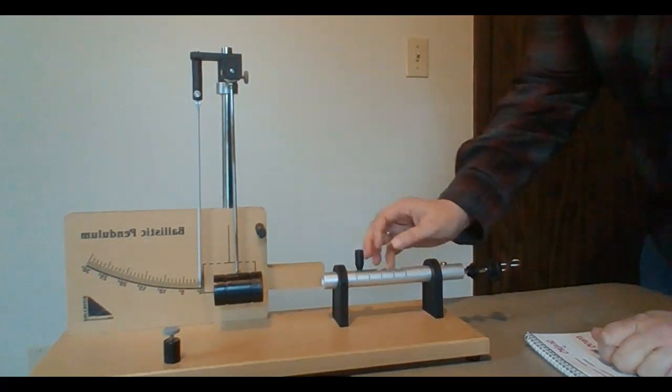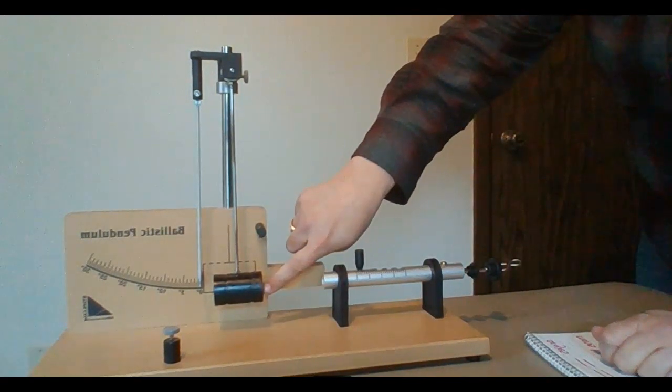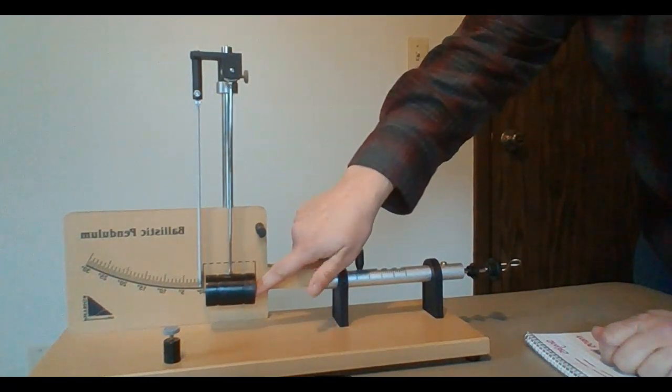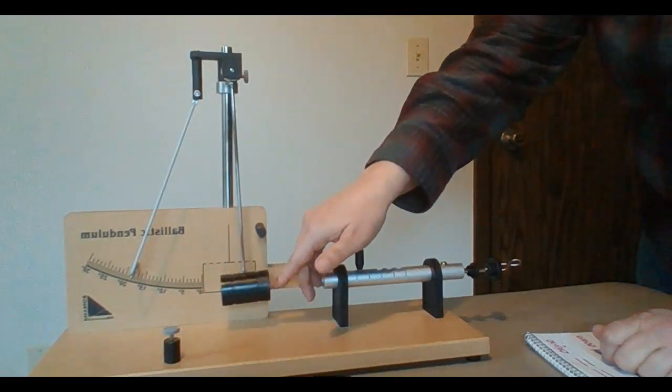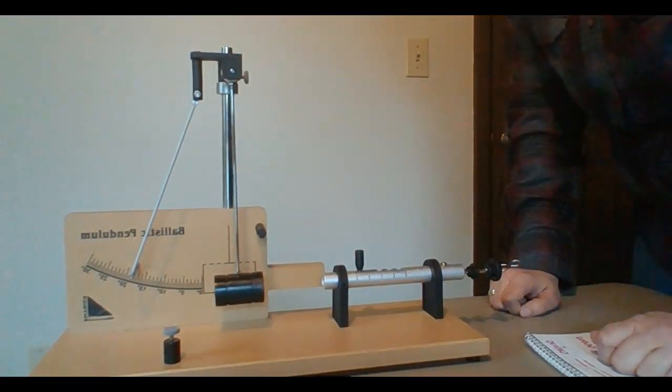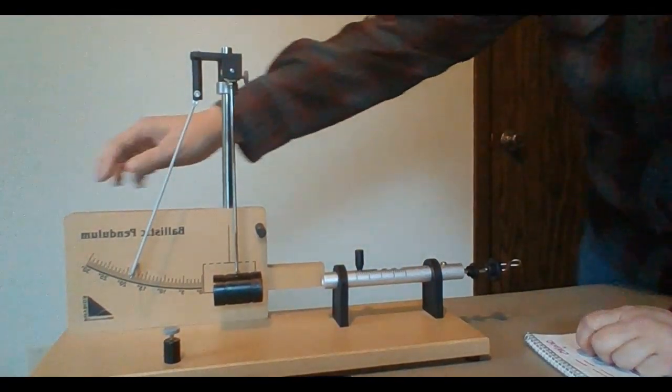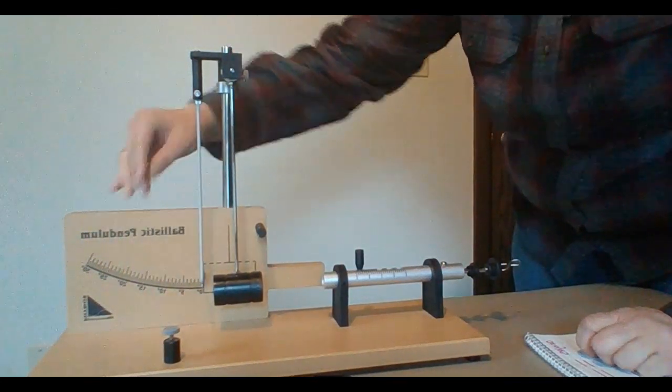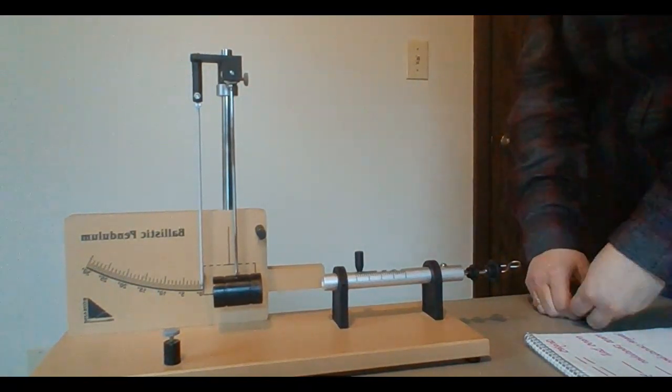The idea with the ballistics pendulum is that this is the cannon, it's going to fire a ball. The ball is going to get lodged inside of this pendulum and the energy it transfers is going to cause the ball and pendulum together to swing. As they swing it's going to record the angle of the maximum height, and from that angle we'll be able to figure out how fast the ball shoots out of this cannon. A similar process is used when we're analyzing bullets or a bow and arrow.